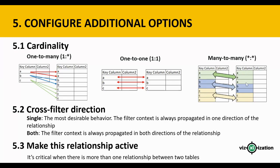For cross-filter direction there are two types: Single and Both. Single is the most desirable behavior — the filter context propagates in one direction, from one to many. With Both, the filter context propagates in both directions. Finally, 'Make this relationship active' is critical when there is more than one relationship between two tables — only one should be active at a time.